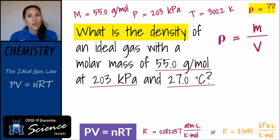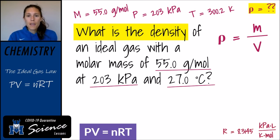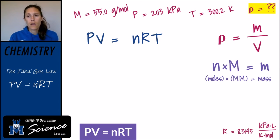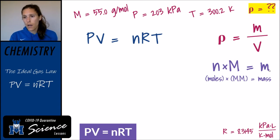The first thing I usually do is reread the question and inventory my variables. When thinking about molar mass, if I can write down something that relates molar mass to moles, that might be helpful. If I take the number of moles of the substance and multiply by the molar mass, that gives me the mass of the substance. This gives me a way to relate density from moles, because I need mass to calculate density.